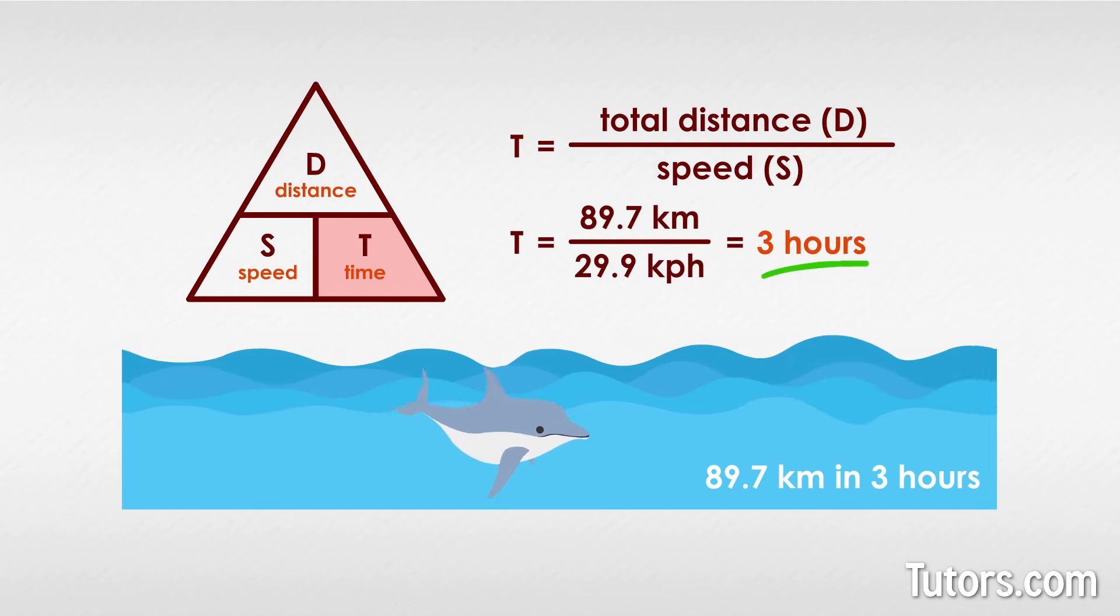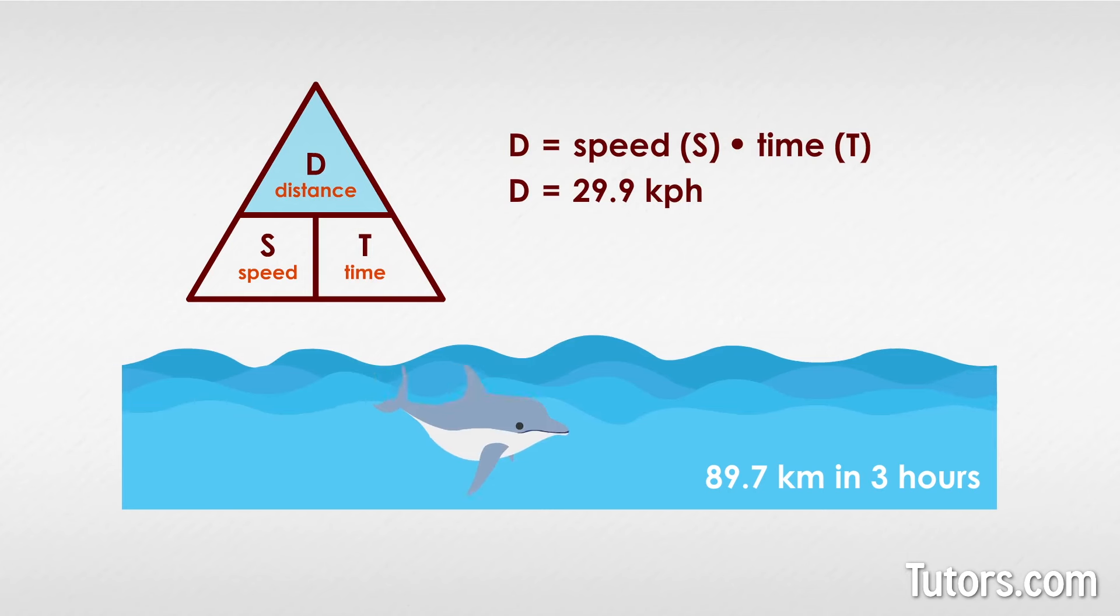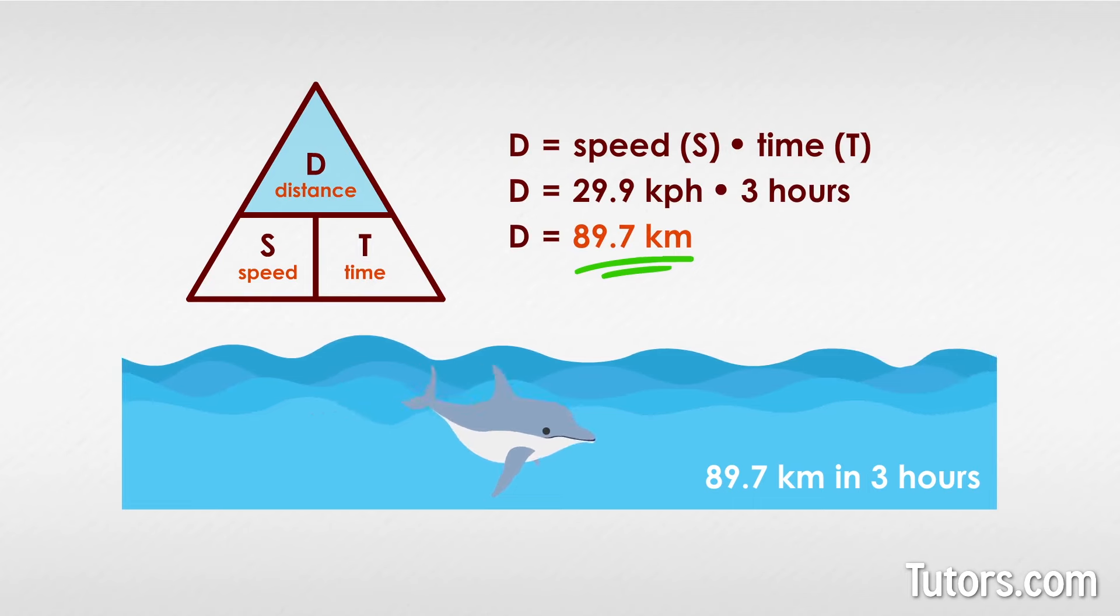If you need the total distance, you must have the speed and the time. D equals 29.9 kilometers per hour times 3 hours, which equals 89.7 kilometers.